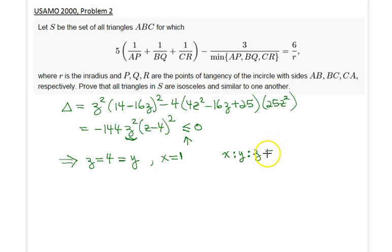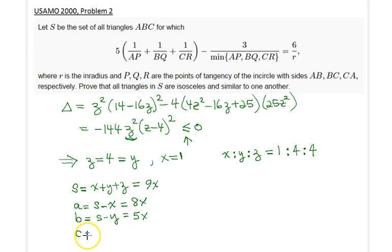Now that we know the values of x, y, and z, it's very easy to figure out the values for a, b, and c as well. Recall that s is equal to x plus y plus z, and therefore that whole thing would be simply equal to nine x here, or simply nine if you will. And then finally, a would be equal to s minus x, so therefore that would be simply 8x. And b would be s minus y, and that would be simply 9x minus 4x which is 5x.